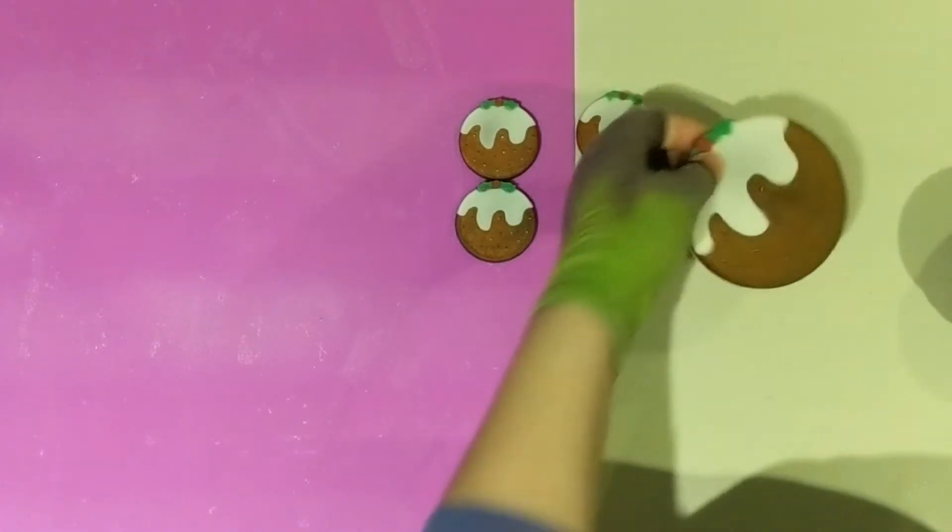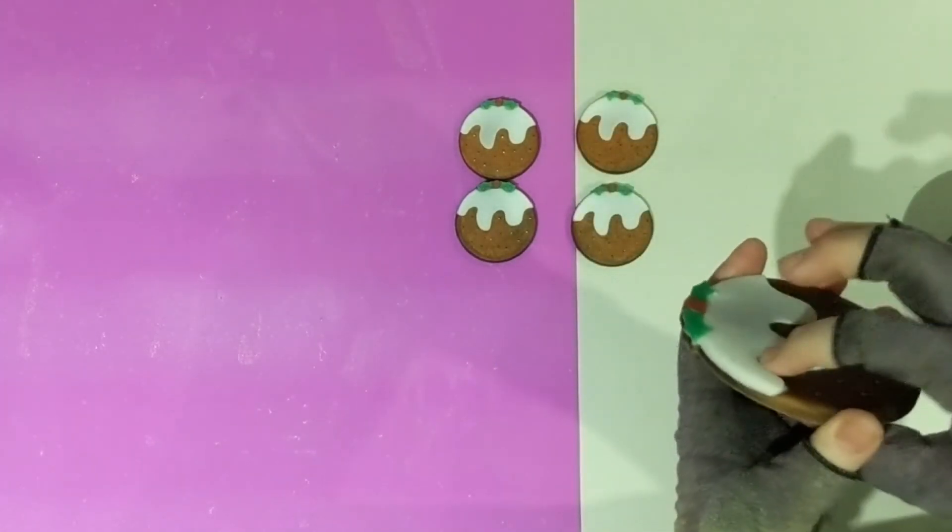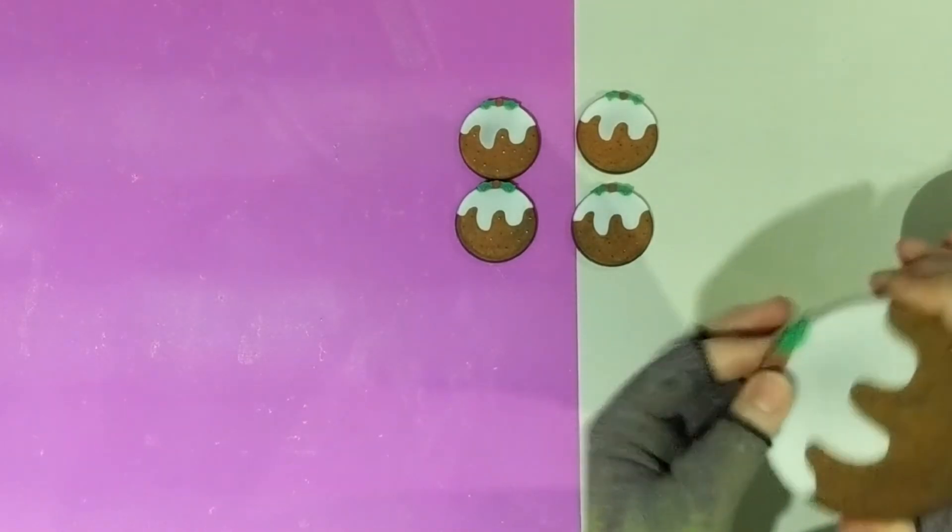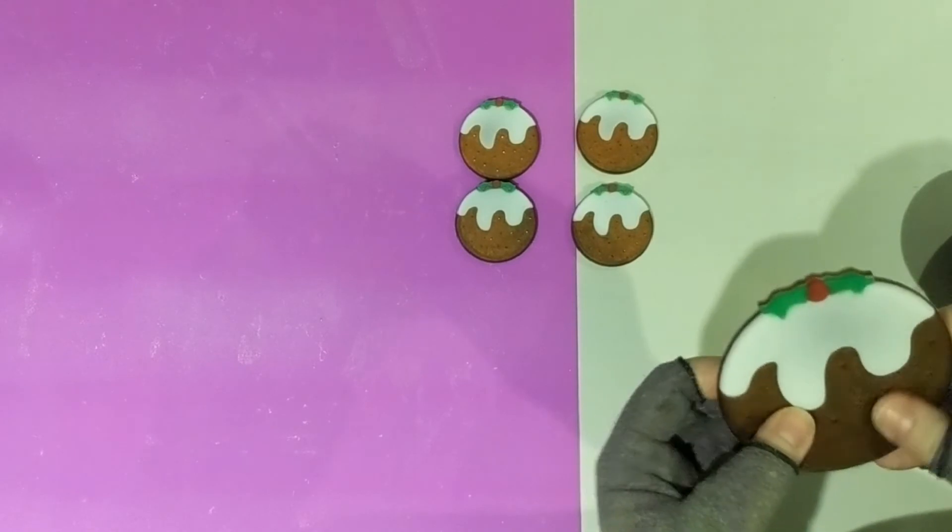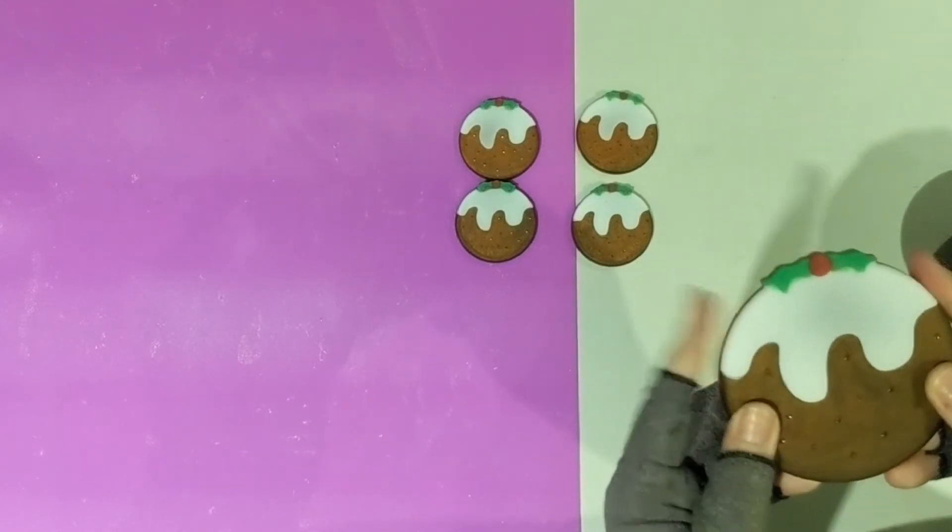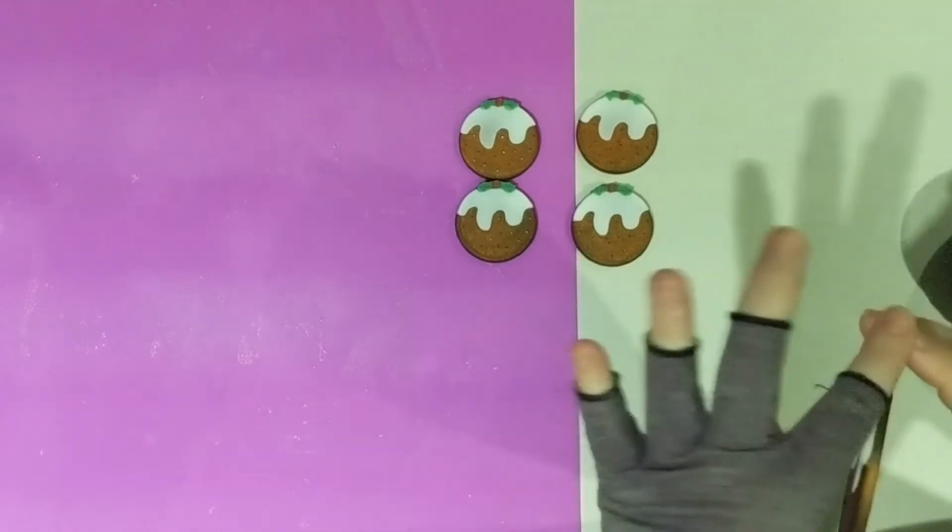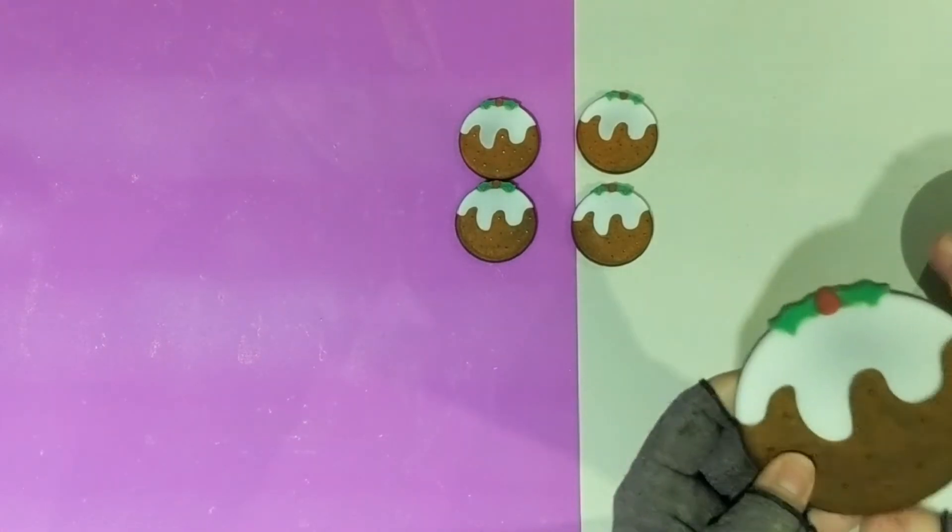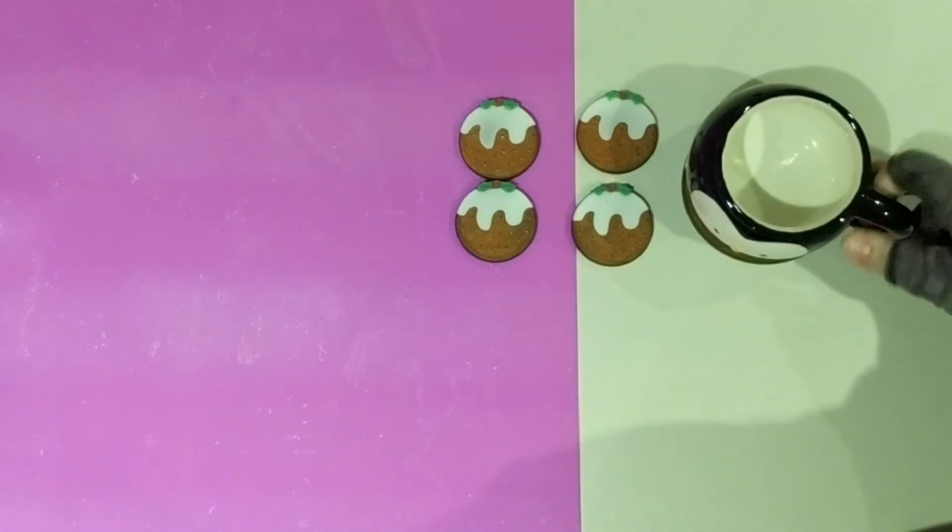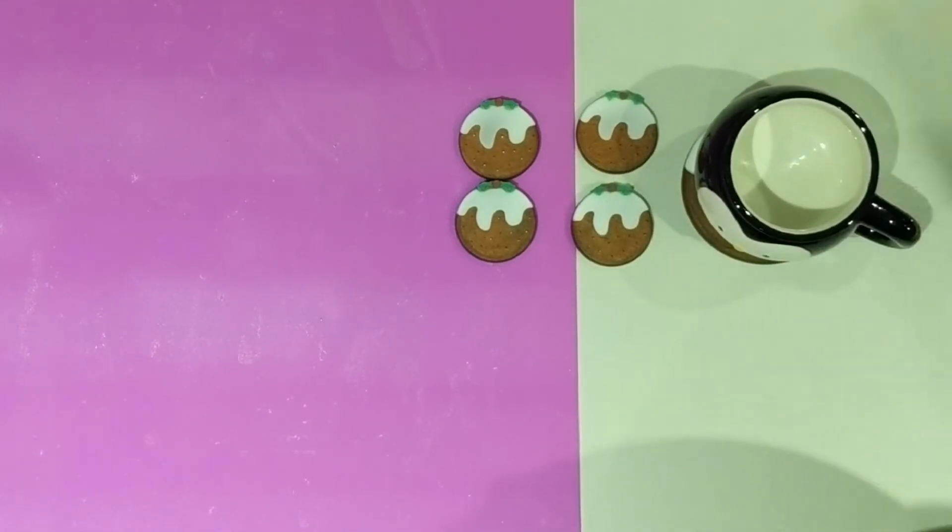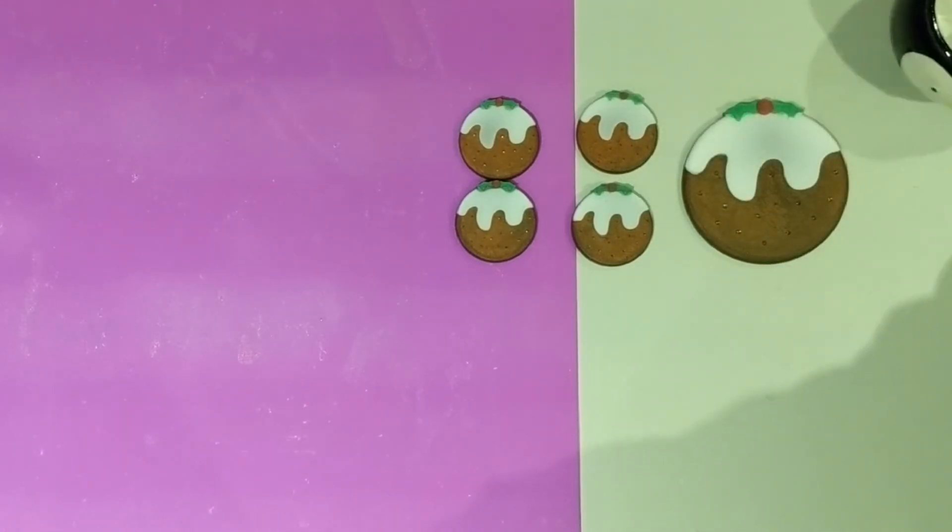And so obviously there is a little bit of a lip here where the white is. So I think to make this a functional coaster, what I am going to have to do is put some tape around the edge and just make it flush. Or just warn people. You know. Be aware that it's not completely flat. I haven't decided what I'll do yet.